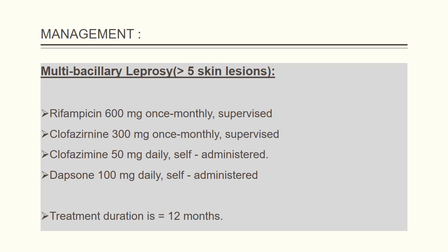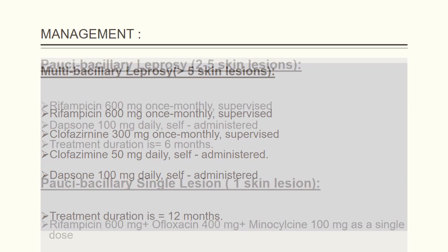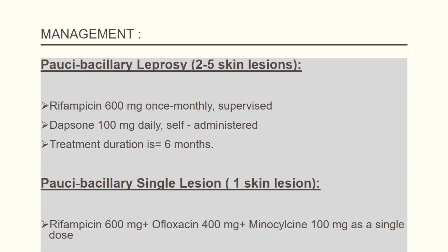For paucibacillary leprosy with two to five skin lesions, rifampicin and dapsone are given on the same regimen but for six months. For paucibacillary leprosy with a single skin lesion, rifampicin 600 mg, ofloxacin 400 mg, and minocycline 100 mg are given as a single dose.